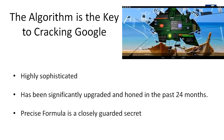The algorithm is the key to cracking Google. If you knew the algorithm, you could determine how to rank. We do know the algorithm is highly sophisticated and has been significantly upgraded and honed in the past 24 months. They're using artificial intelligence in addition to rote formulas to determine where your website should rank. The precise formula is a closely guarded secret — kind of like the formula for Coke, which is only known by two people in the world, kept in a vault in Switzerland. Sergey Brin and Larry Page probably know the formula, but even within Google there's only a handful of people who know precisely what the entire formula is.